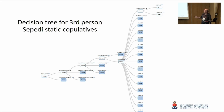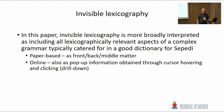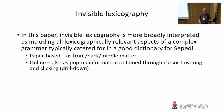You will also see that in each case where you can make a choice, there's the option to drill down to get more information on how this actually works and what the underlying context is. In this paper, invisible lexicography is more broadly interpreted as including all the lexicographically relevant aspects of a complex grammar — typically catered for in a good dictionary of Zepedi or a good grammar of Zepedi — whether paper-based with front, middle, or back matter, online as pop-up windows, or as references to various types of resources. The user can always move out to different types of information. You can hover with the cursor over something or drill down to get more information if need be.